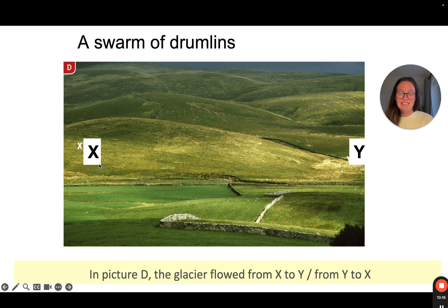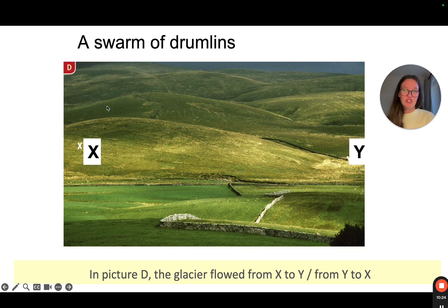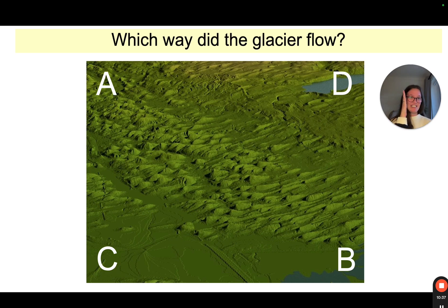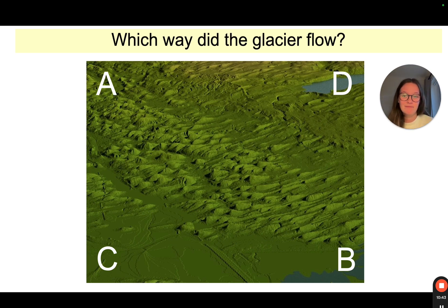The direction of drumlins: the steeper side is the stoss and the more gentle incline is the lee — also called crag and tail. The steep side is where the glacier came from and the relaxed incline is where it was going. So in this example, the glacier flowed from C up to D.